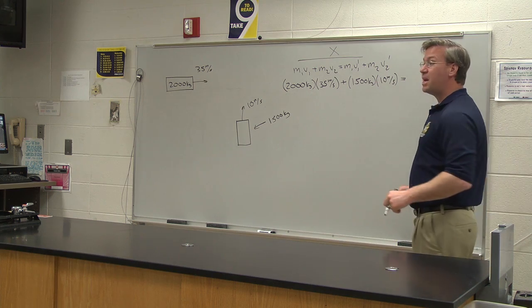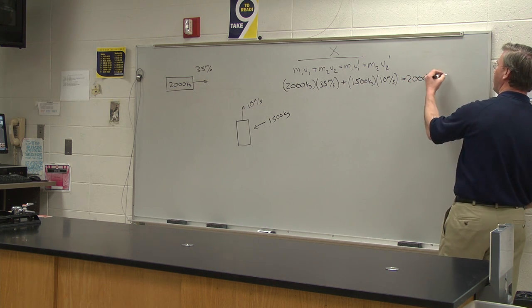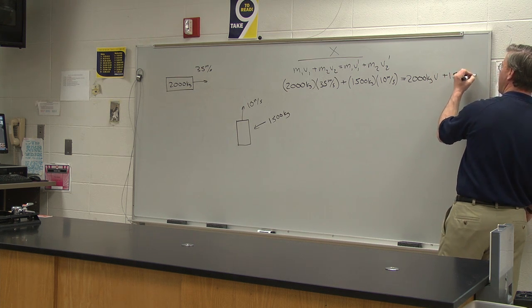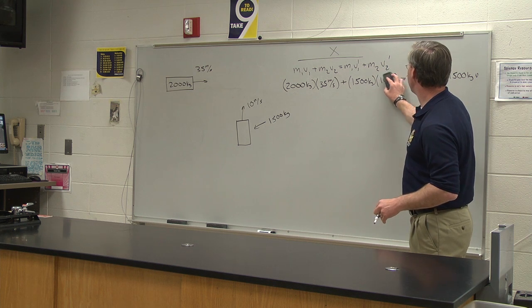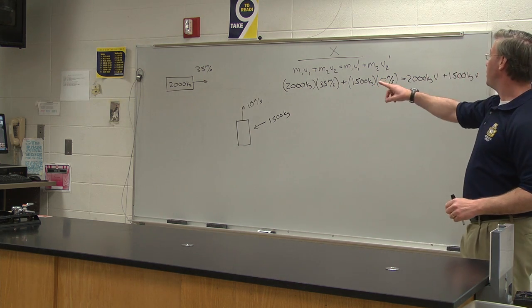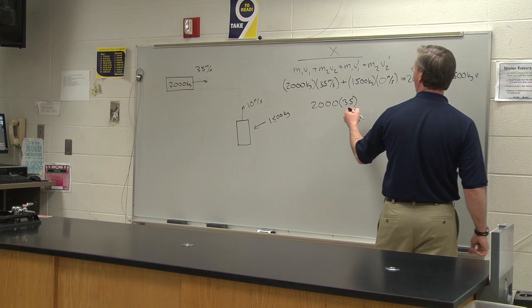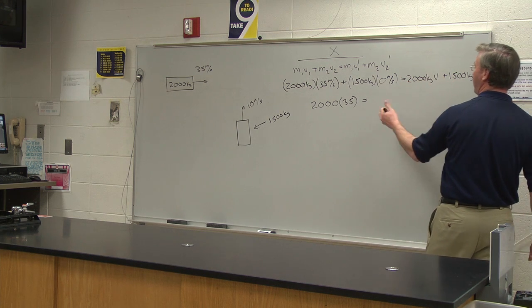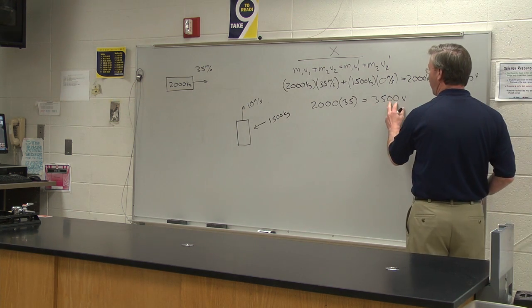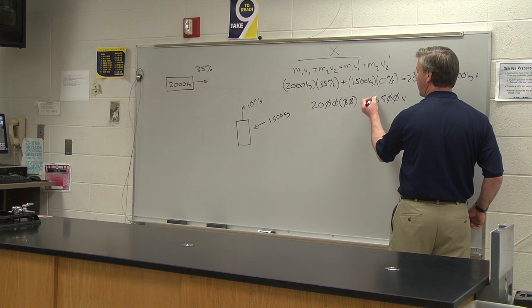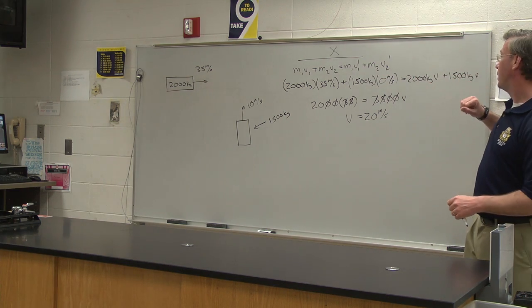After the collision they stick together, so on the right side we have 2,000 kilograms times some unknown v plus 1,500 kilograms times that same unknown v. Note: the second car's x-velocity should be zero. Working this out: 2,000 × 35 = 3,500v, and solving gives a velocity of 20 meters per second in the x-dimension.